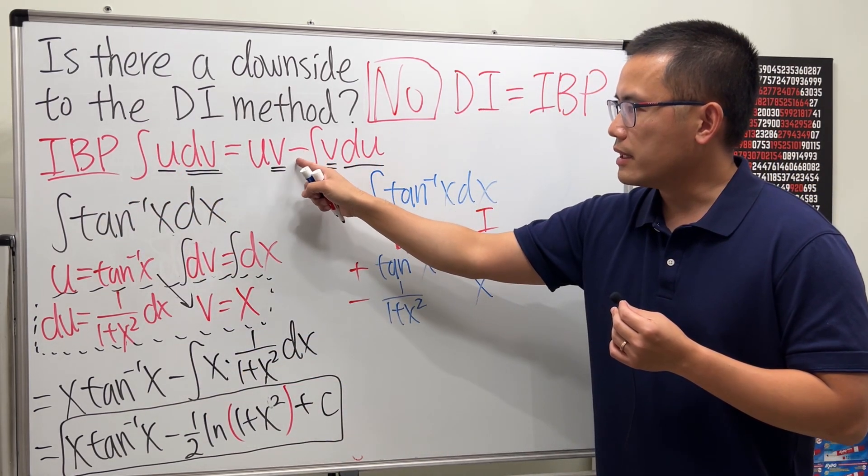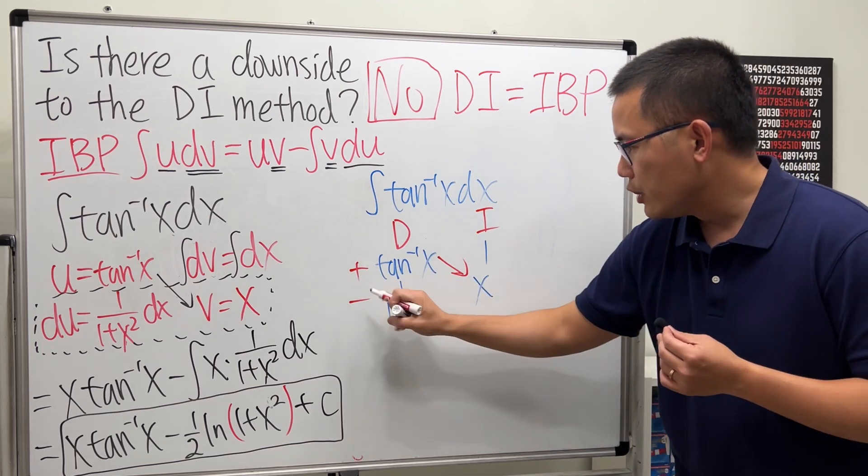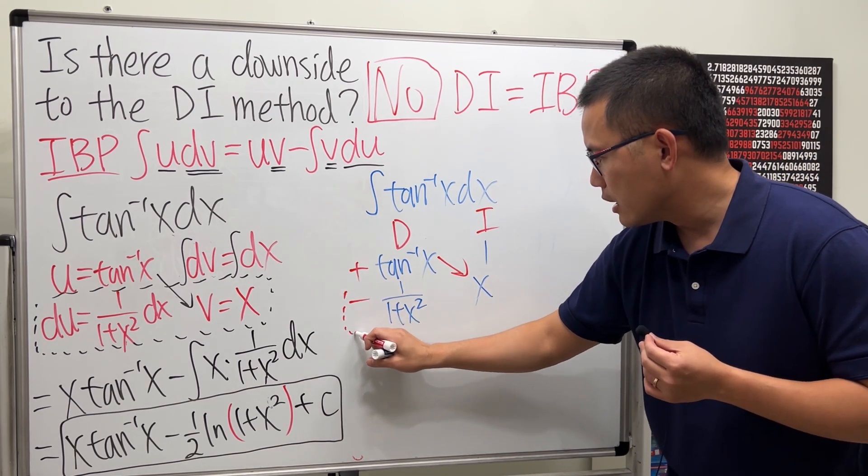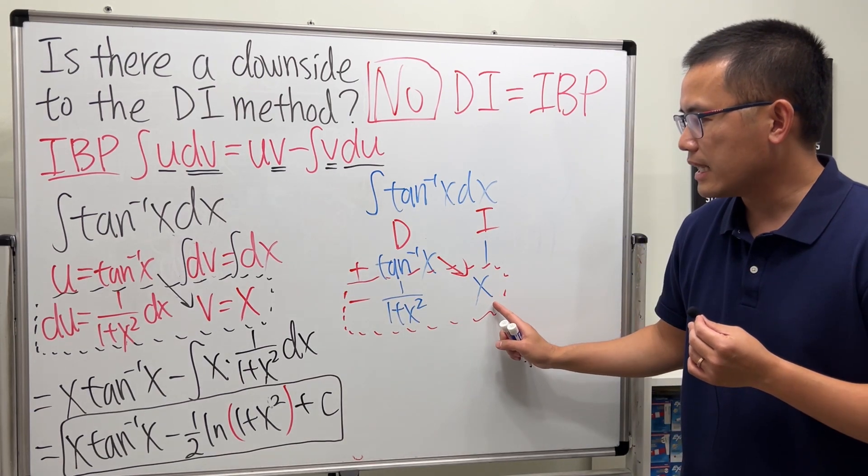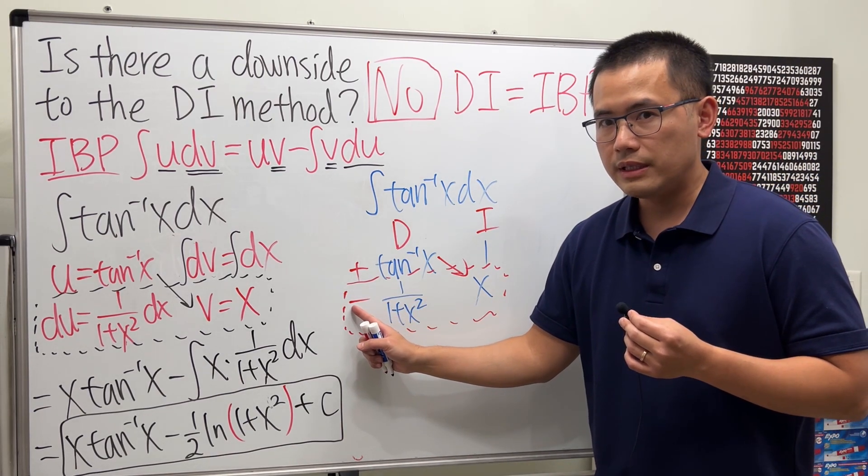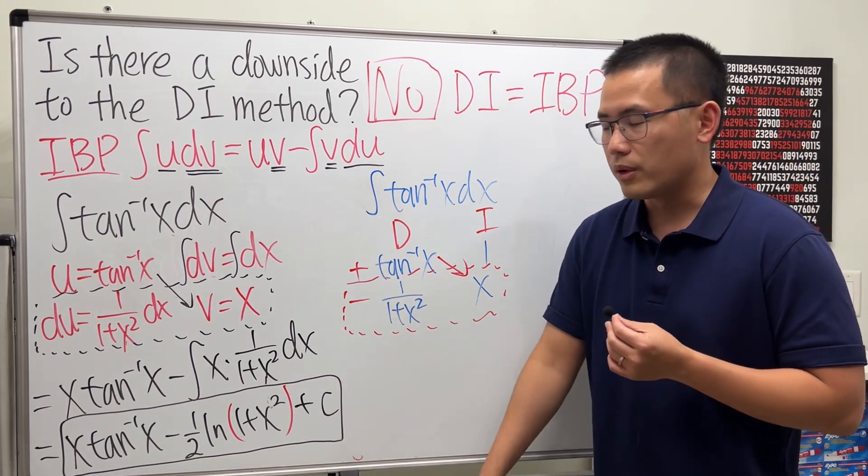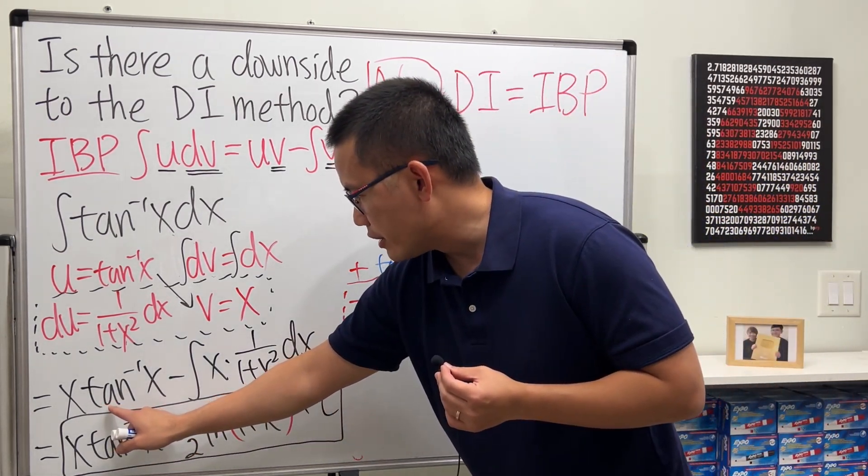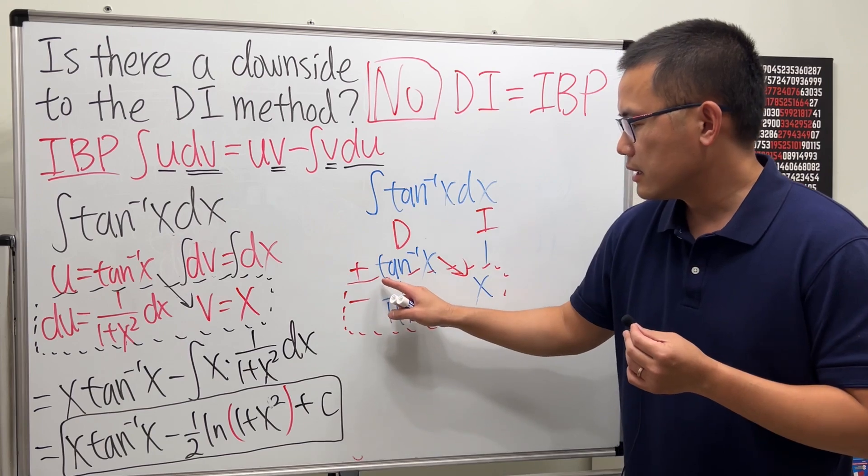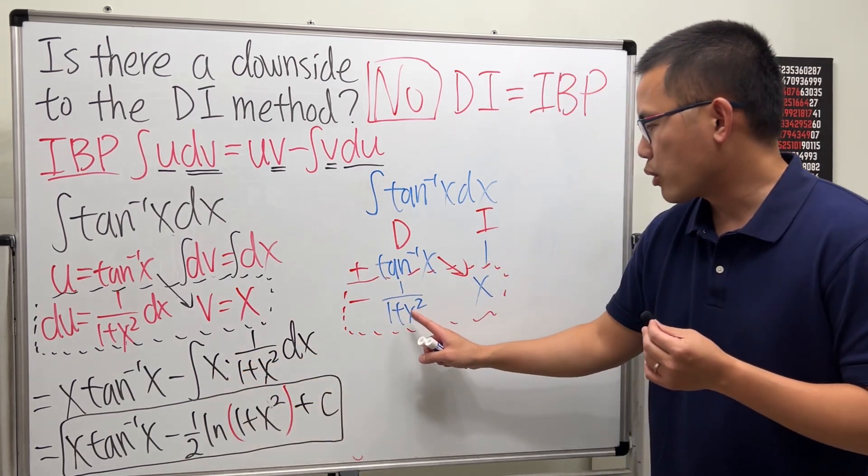But, this right here is a negative integral. So, you will just have to multiply these two things in this row. This times that. Along with the negative. And it puts itself in an integral. So, of course, you can see that this times that is this right here.